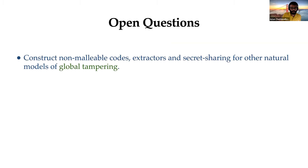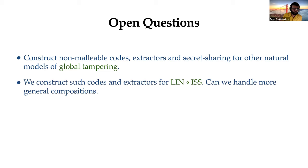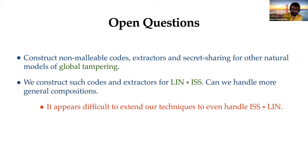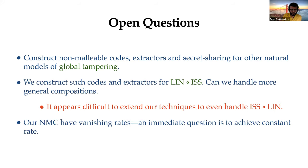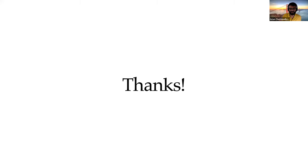Some open questions: a natural direction is handling more global tampering, in particular more compositions — our work only gave a specific example, and our techniques do not extend to reversing the order of tampering, which is a really intriguing open question. Another direction is to improve the parameters of the various non-malleable codes we constructed. Thanks for listening.